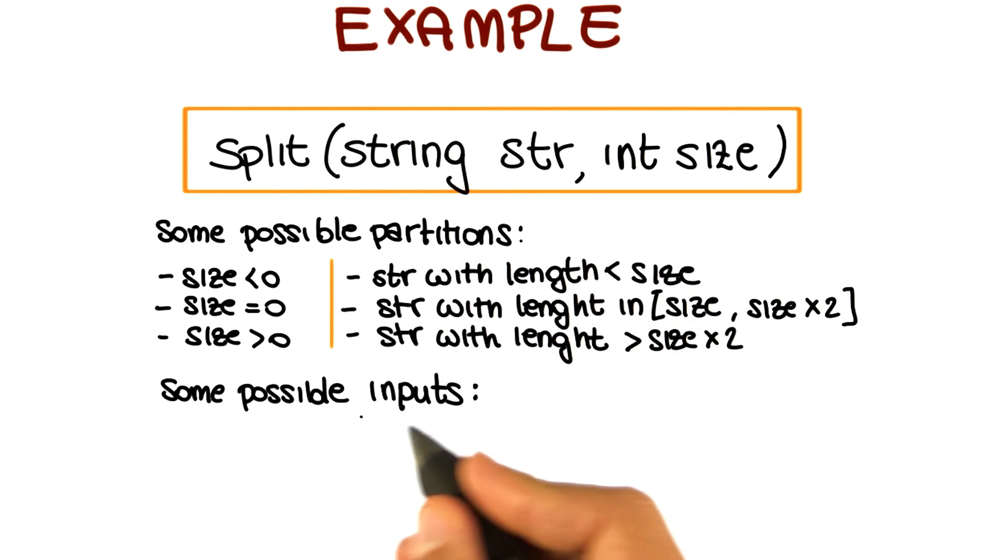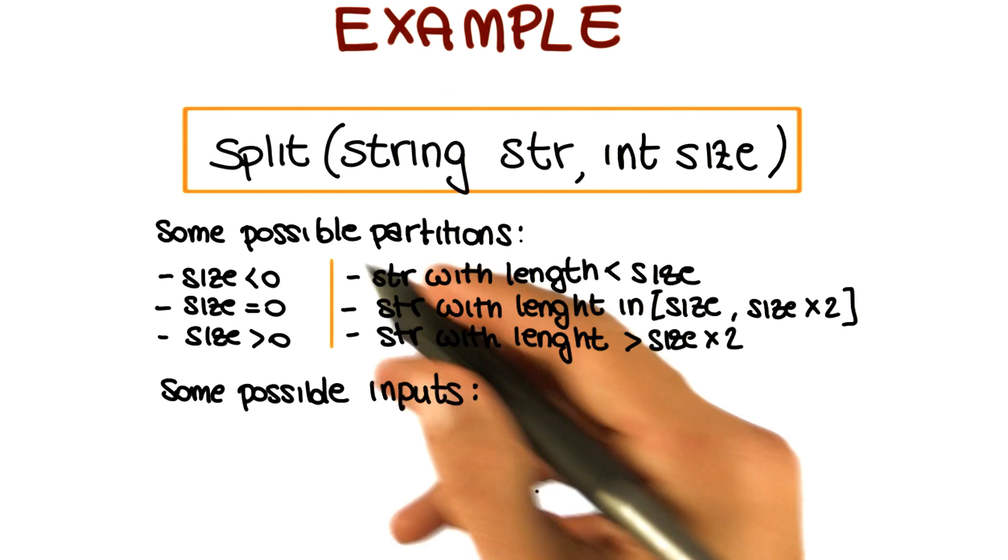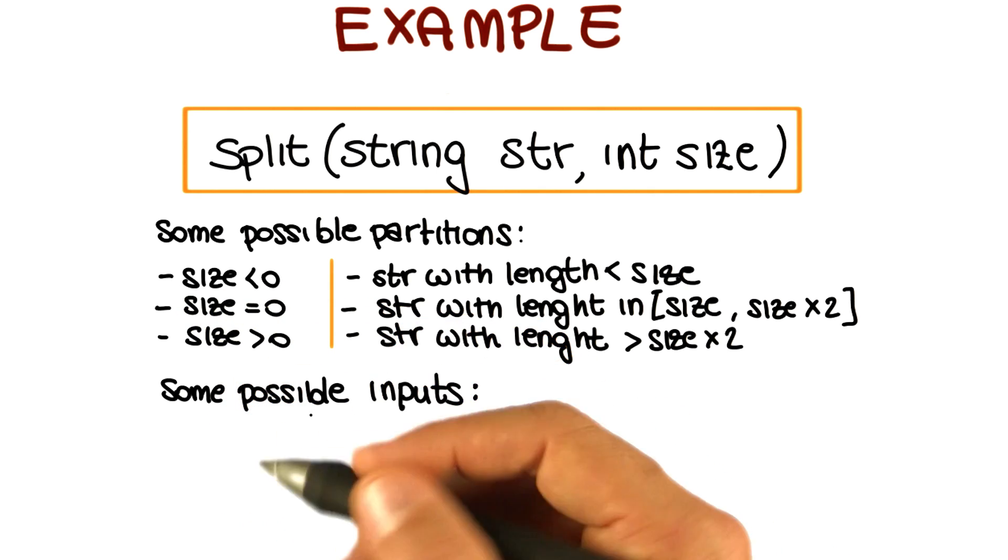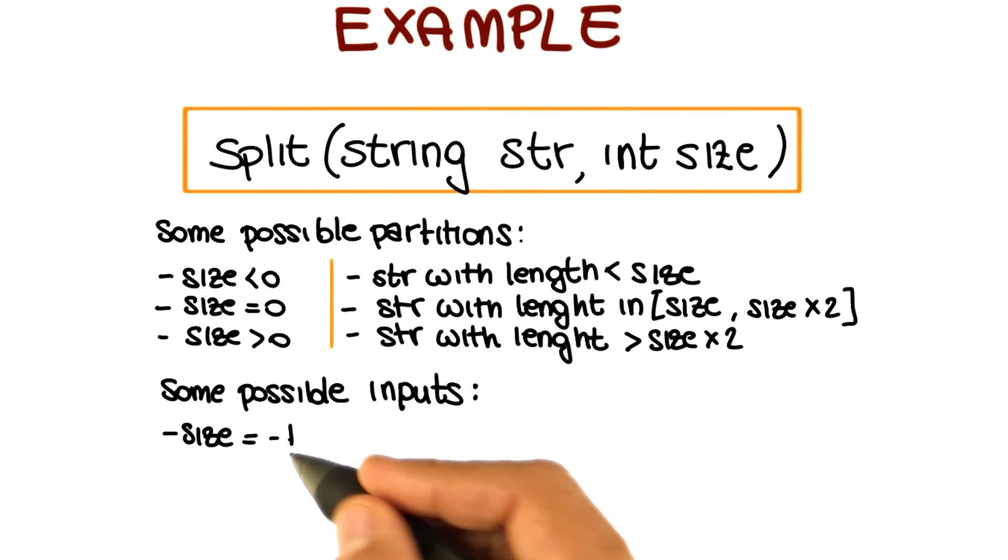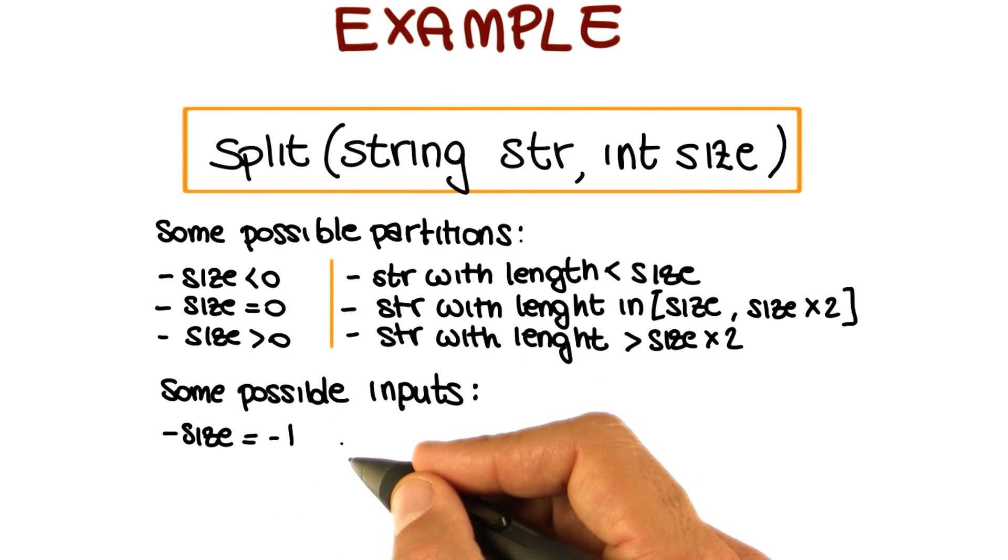So let's look at what some possible inputs will be for the subdomains that we identified when we use the idea of selecting inputs at the boundary. If we look at the first subdomain, size less than zero, one reasonable input is size equals minus one, because minus one is the boundary value for the domain of the integers less than zero.